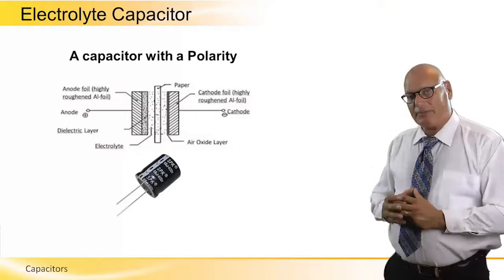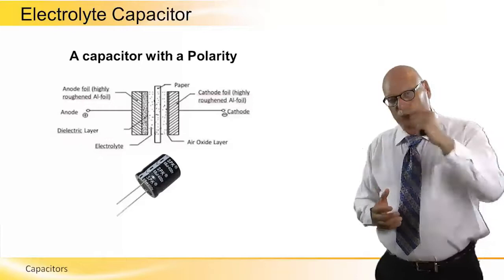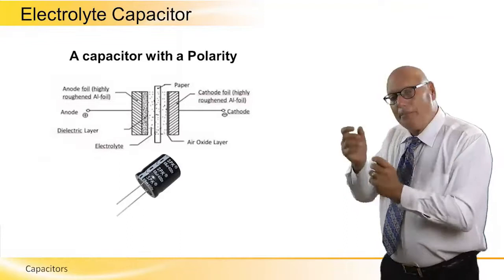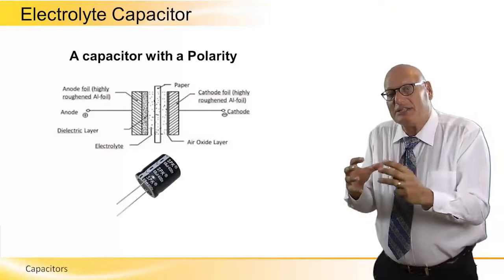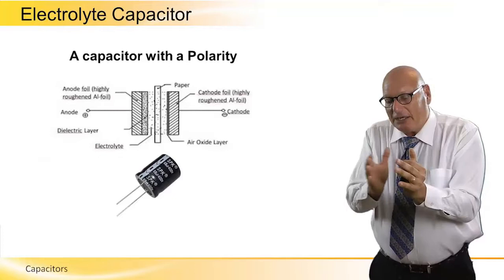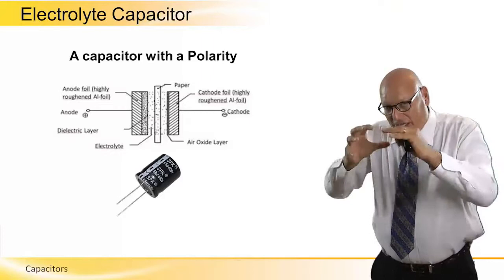We connect the anode — the plus end — to the plus side of the battery, and the cathode — the minus — to the minus side of the battery, in order to charge the capacitor. This is how it is constructed and structured. We have electrolyte material and a paper holding the entire system together, holding the pluses on one side and minuses on the other side. This dielectric material is an insulation material — pluses cannot cross to the other side, and minuses cannot cross to the other side. It acts as a storage device.